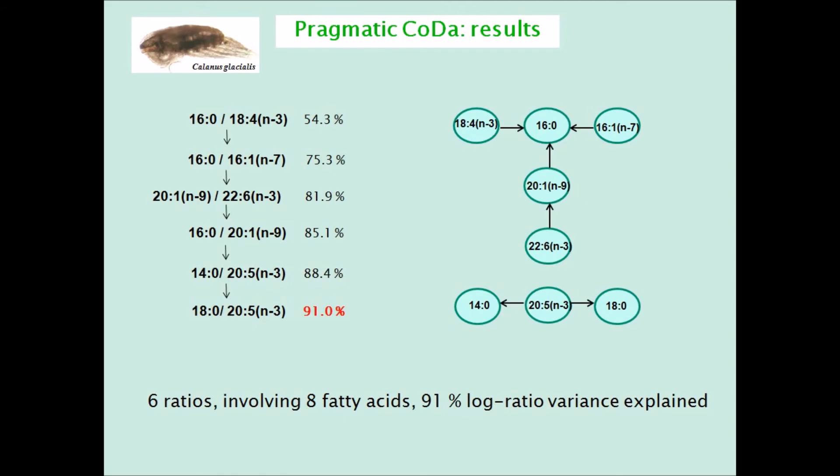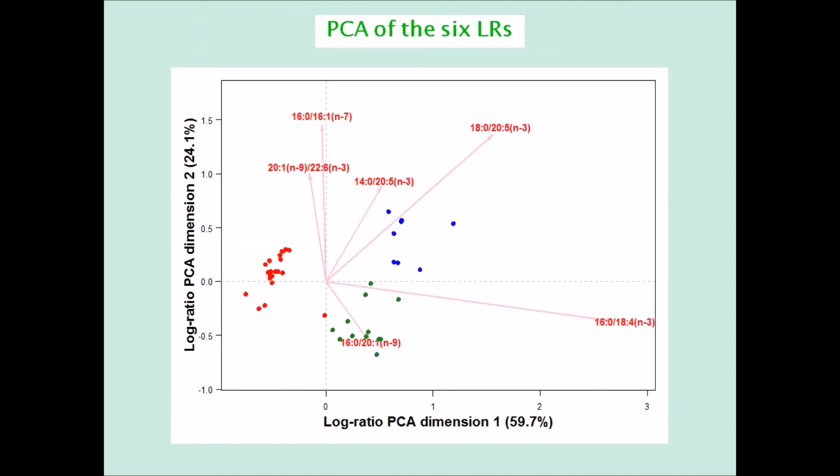This is the PCA of the six chosen log ratios. The three seasons are nicely separated again, and the two first ratios are the most prominent on the first and second axes.